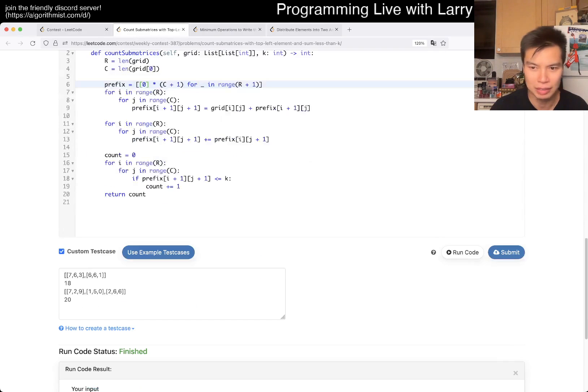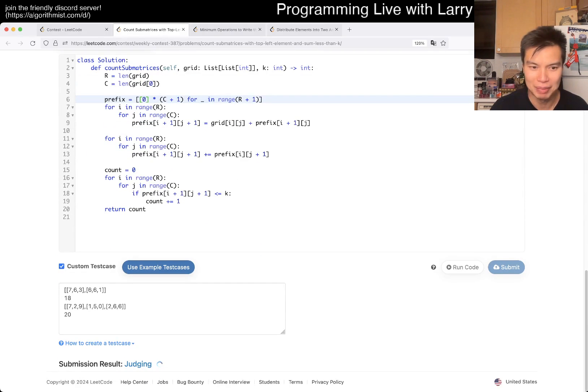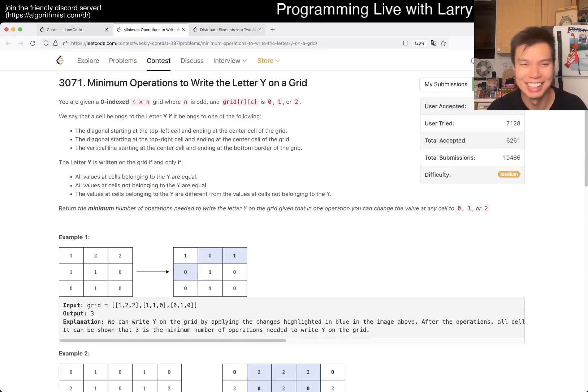All right, let's give it a YOLO. If I mess this up, everybody's sad. I did go a little bit fast. If this was a real contest, maybe I would spend an extra half a minute on it, to be honest. But all right. Minimum operations to write the letter Y on a grid.